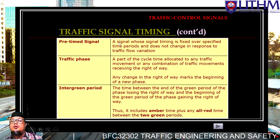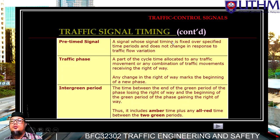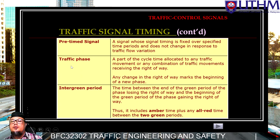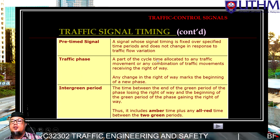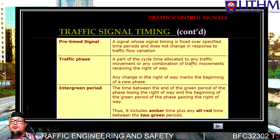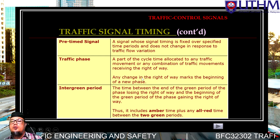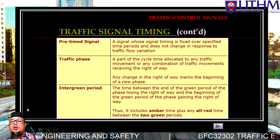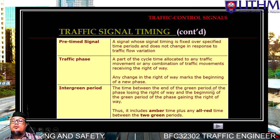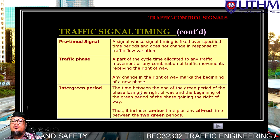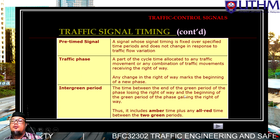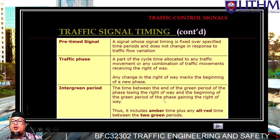A 'pre-timed signal' is a signal whose timing is fixed over service — fixed period of time. 'Traffic phase' is the part of the cycle time allocated to any traffic movement or any combination of traffic movements receiving the right of way. 'Intergreen' is the time between the end of the green period of the phase losing right of way and the beginning of the green period of the phase gaining right of way.